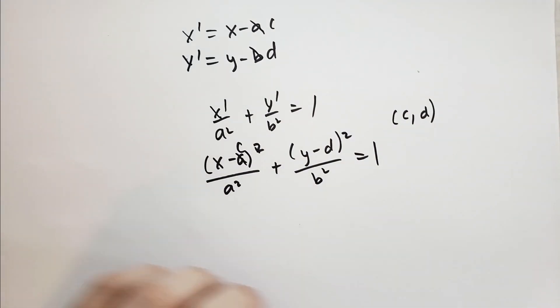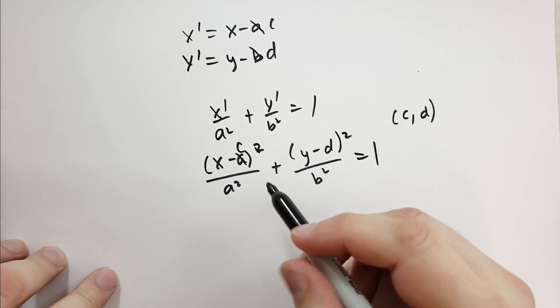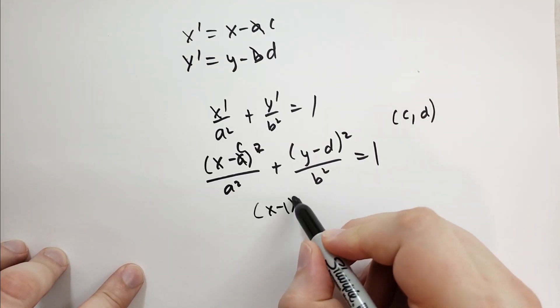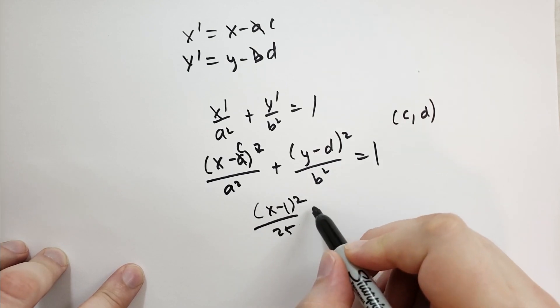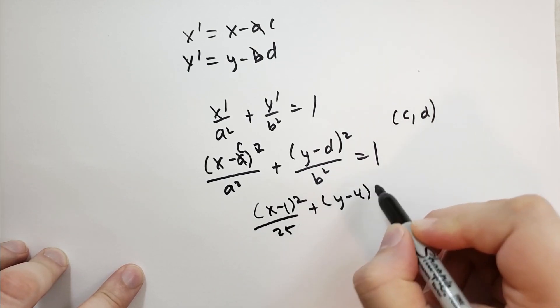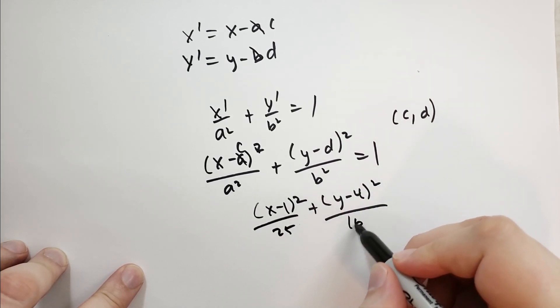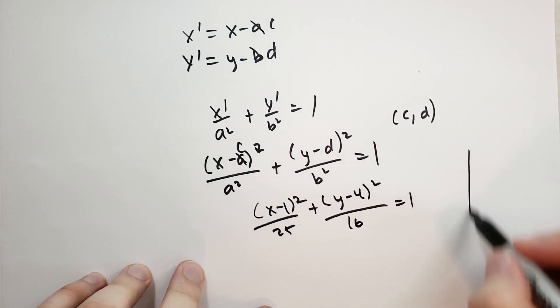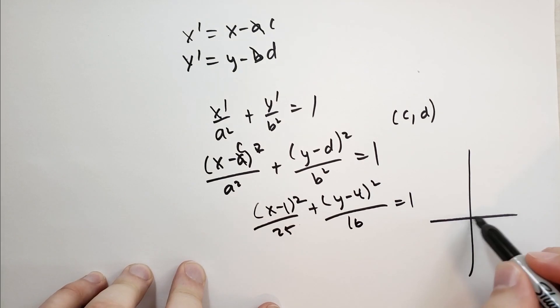So as an example, let's draw this one. So the equation is x minus 1 squared over 25 plus y minus 4 squared over 16 has to equal 1. And so we're going to get the center of this is going to be at 1, 4.